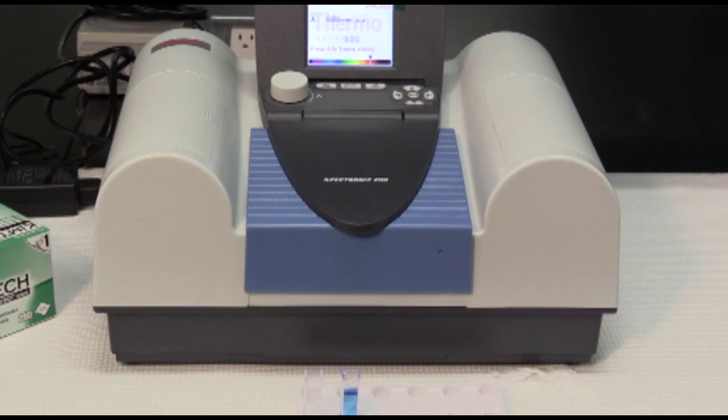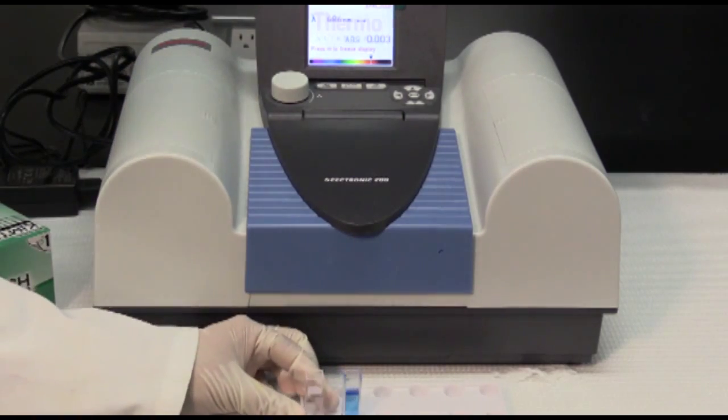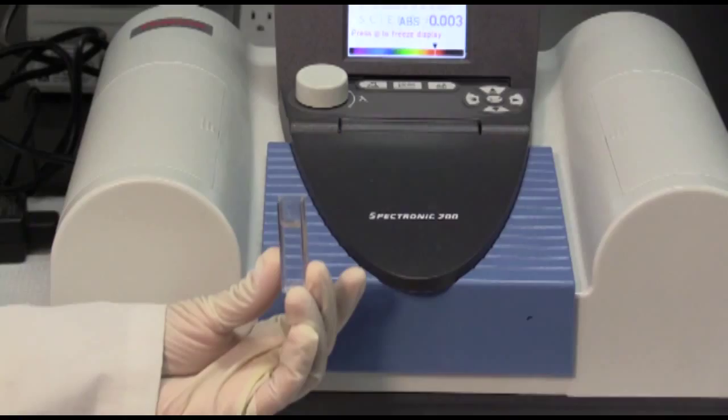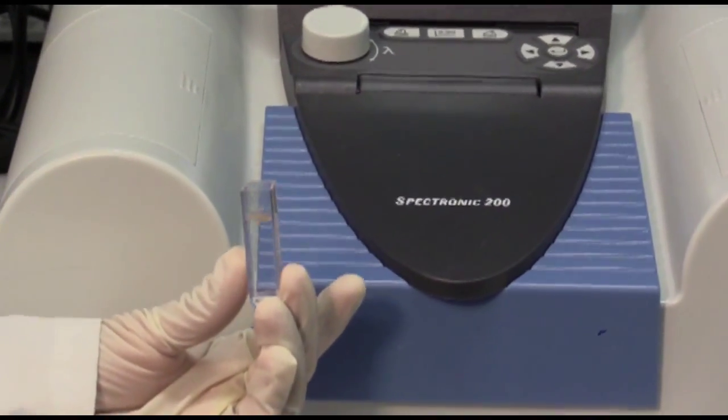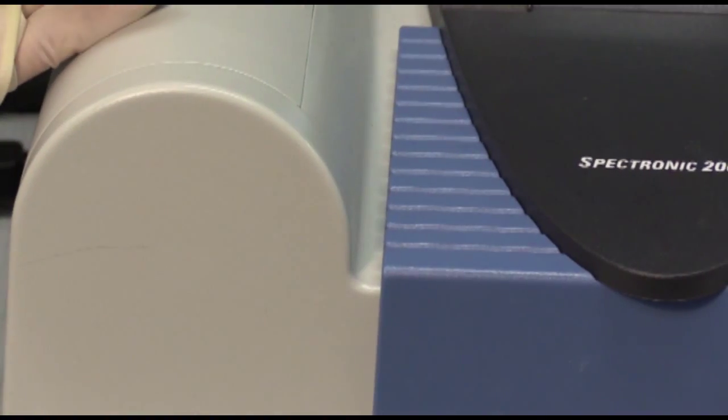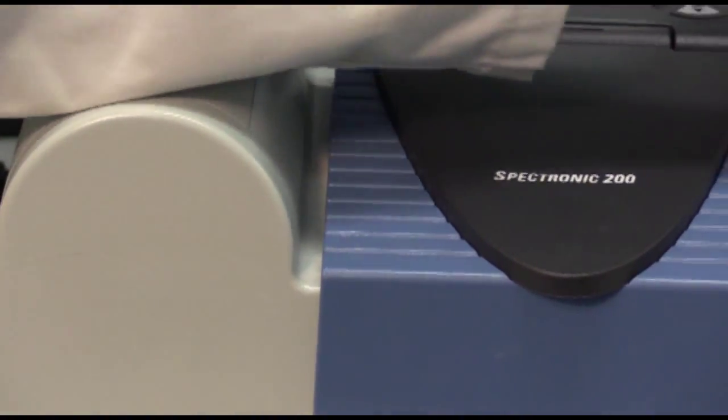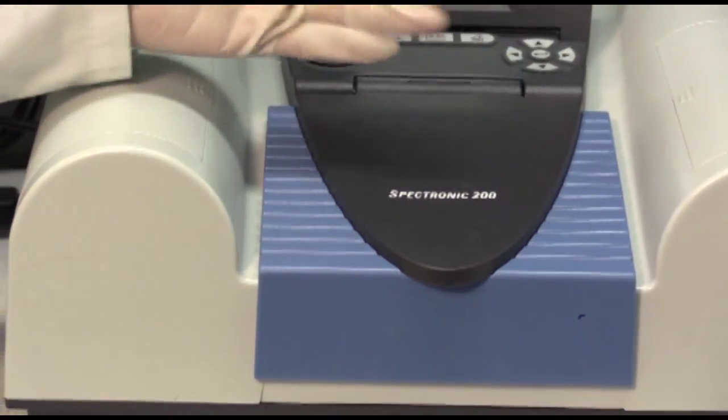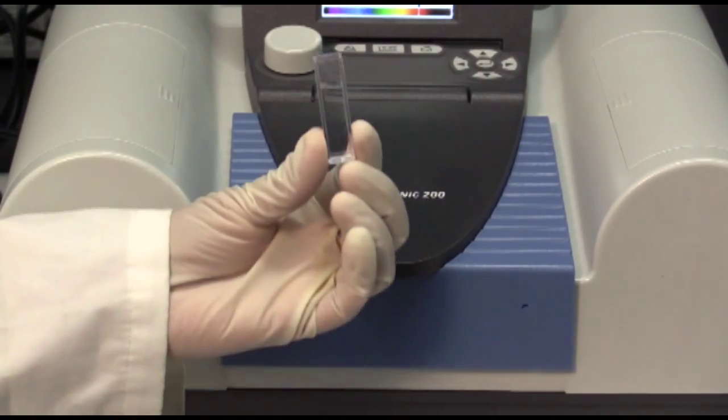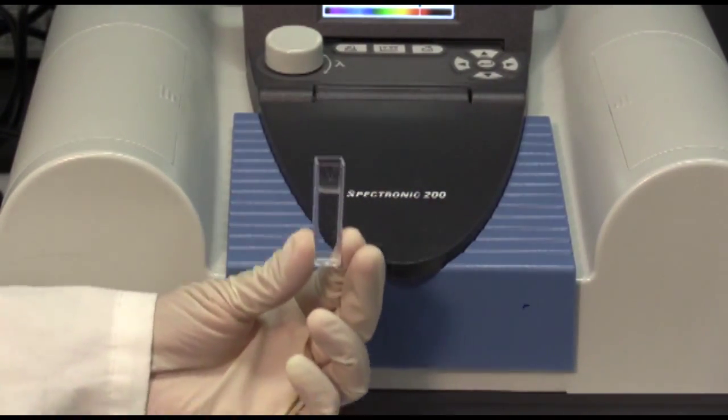Once you're ready to measure your samples, start with the blank. Take your blank, and before you put it in, make sure you understand which way the path of light is orientated in the instrument. In our particular instrument, the path of light will be going in this direction, so you want to orientate your cuvette so that the light is going through the clear sides of the cuvette.